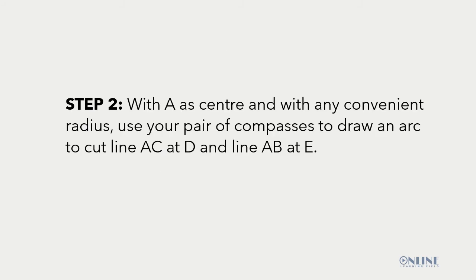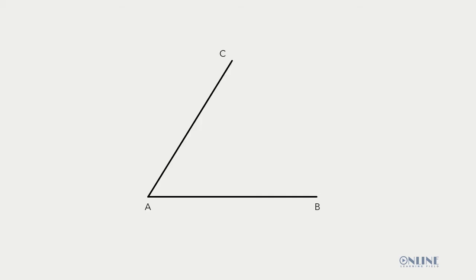Step 2: With A as center and with any convenient radius, use your pair of compasses to draw an arc to cut line AC at D and line AB at E. Back to the board.